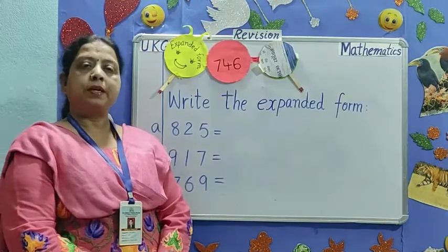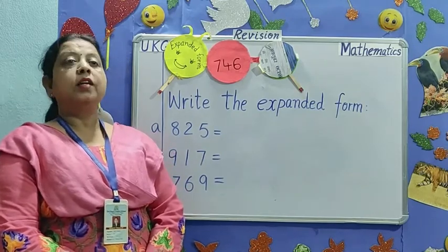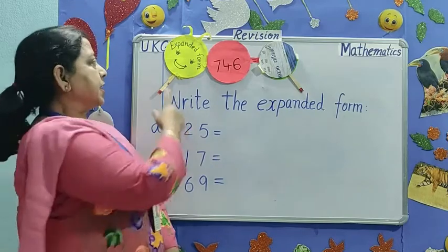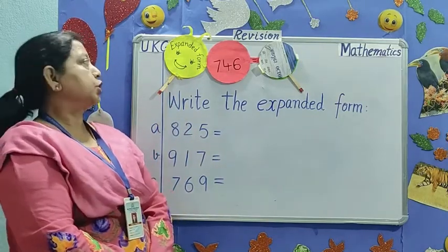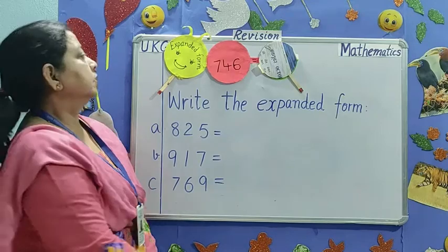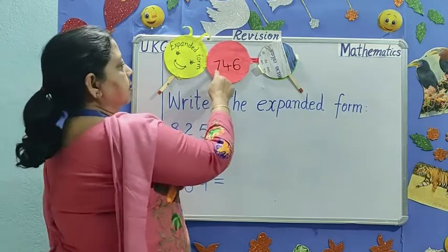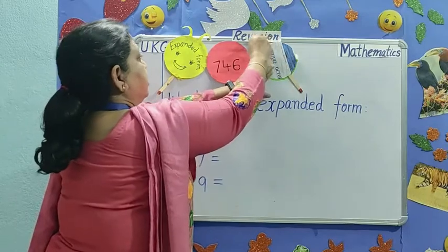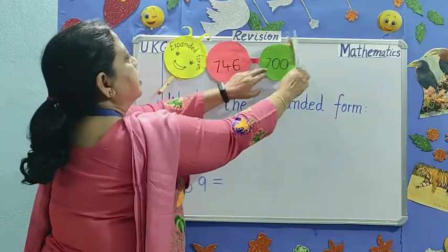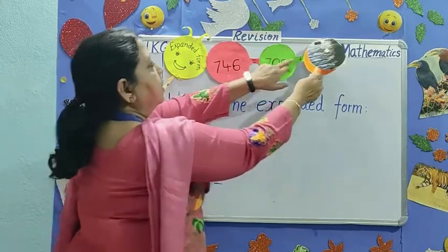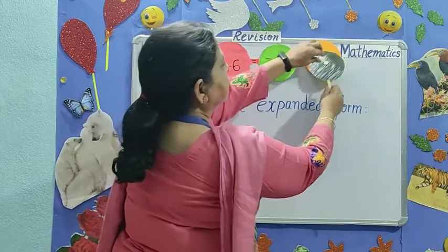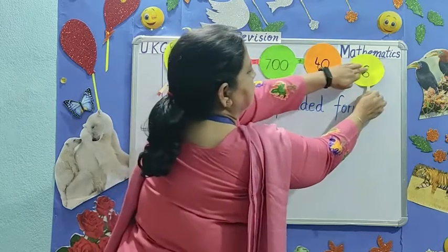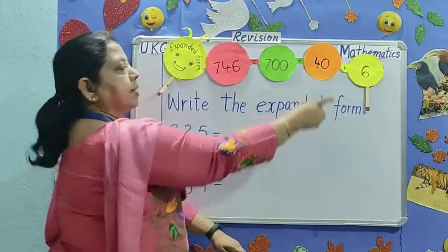The third topic is expanded form. Children, have you seen a caterpillar? This caterpillar is going to tell you how to expand the number. First you read the number. 746. 700 plus 40 plus 6. This is the expanded form.